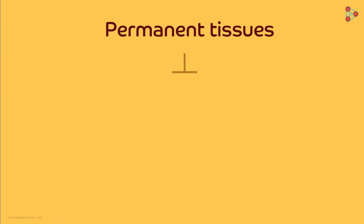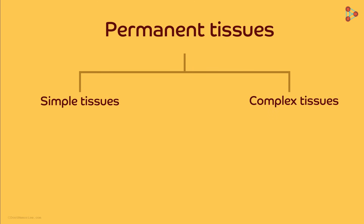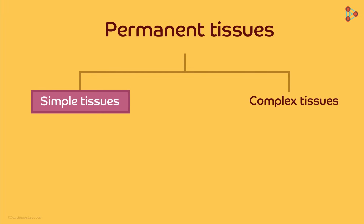Do you know there are mainly two types of permanent tissues? They are simple tissues and complex tissues. We will look at the simple permanent tissues in detail.